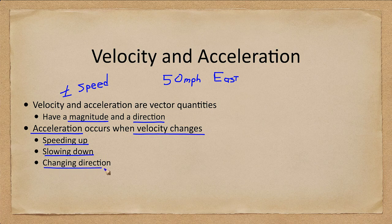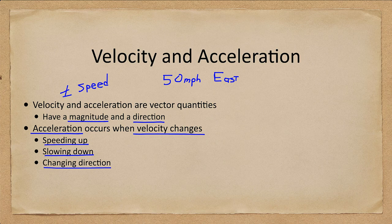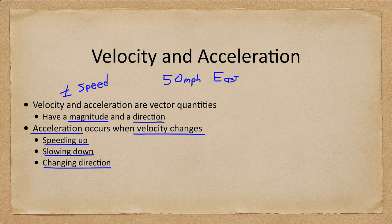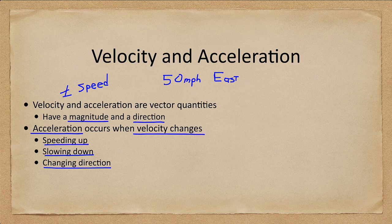It can also occur when directions change. So if you change direction that is also a change in velocity because you could be going from 50 miles per hour east to 50 miles per hour north. You have changed your direction and therefore accelerated even though your speed has remained exactly the same.